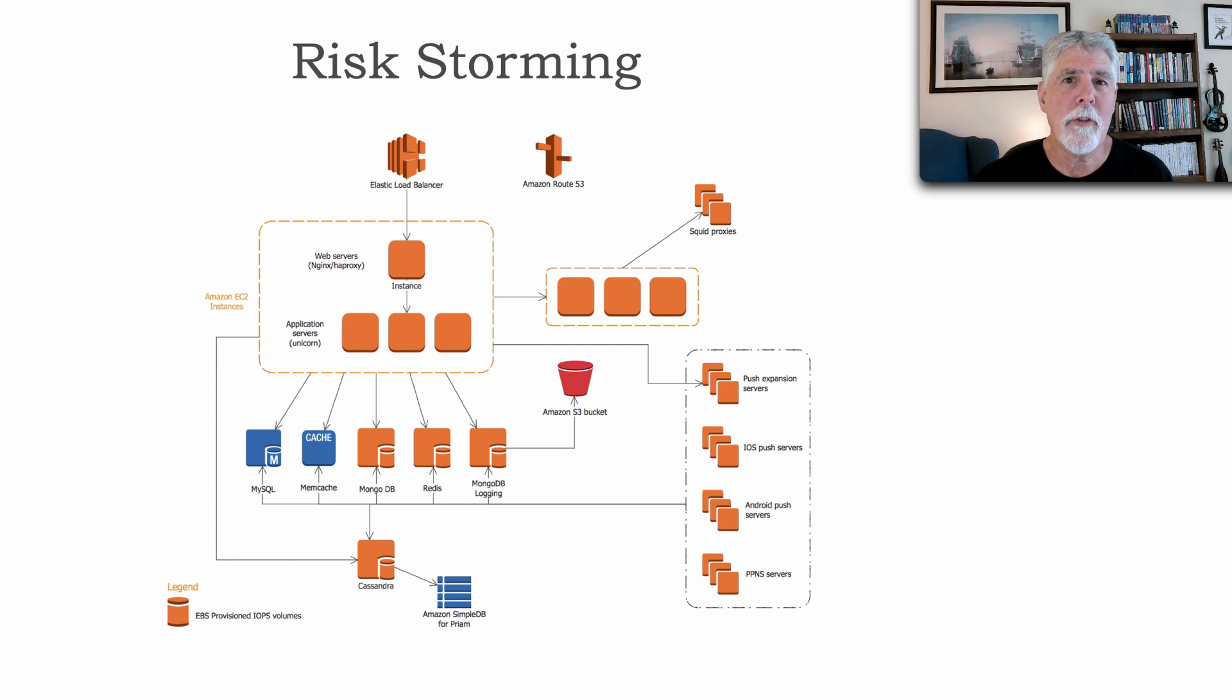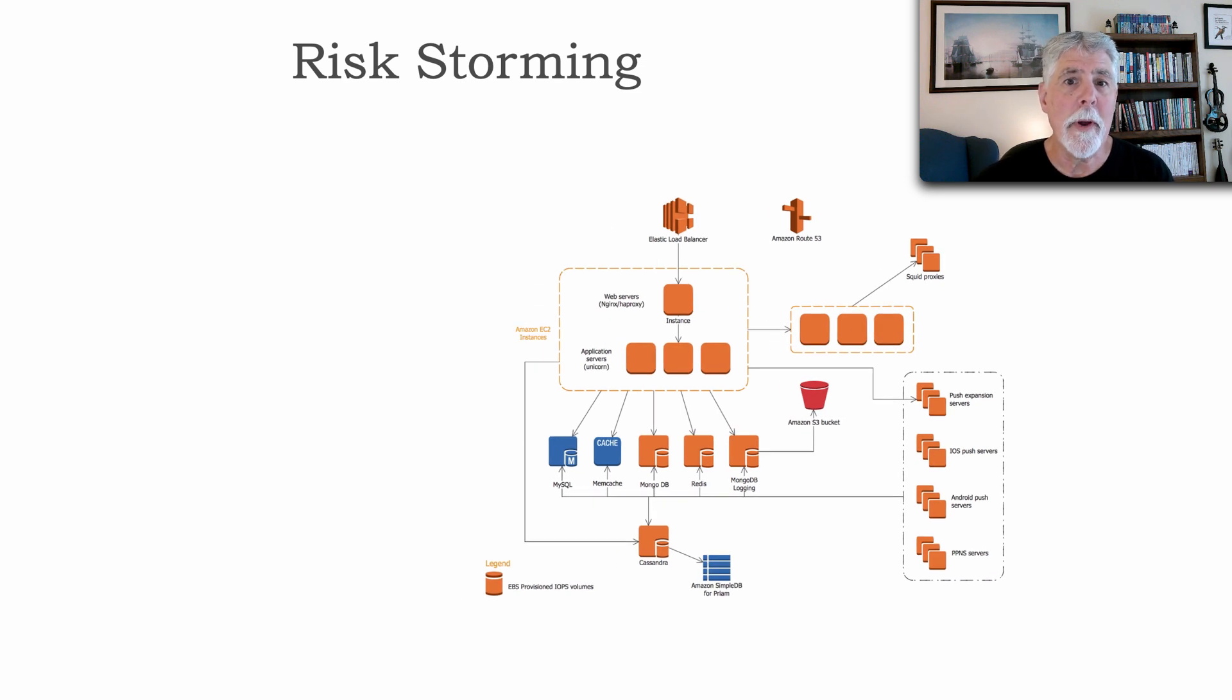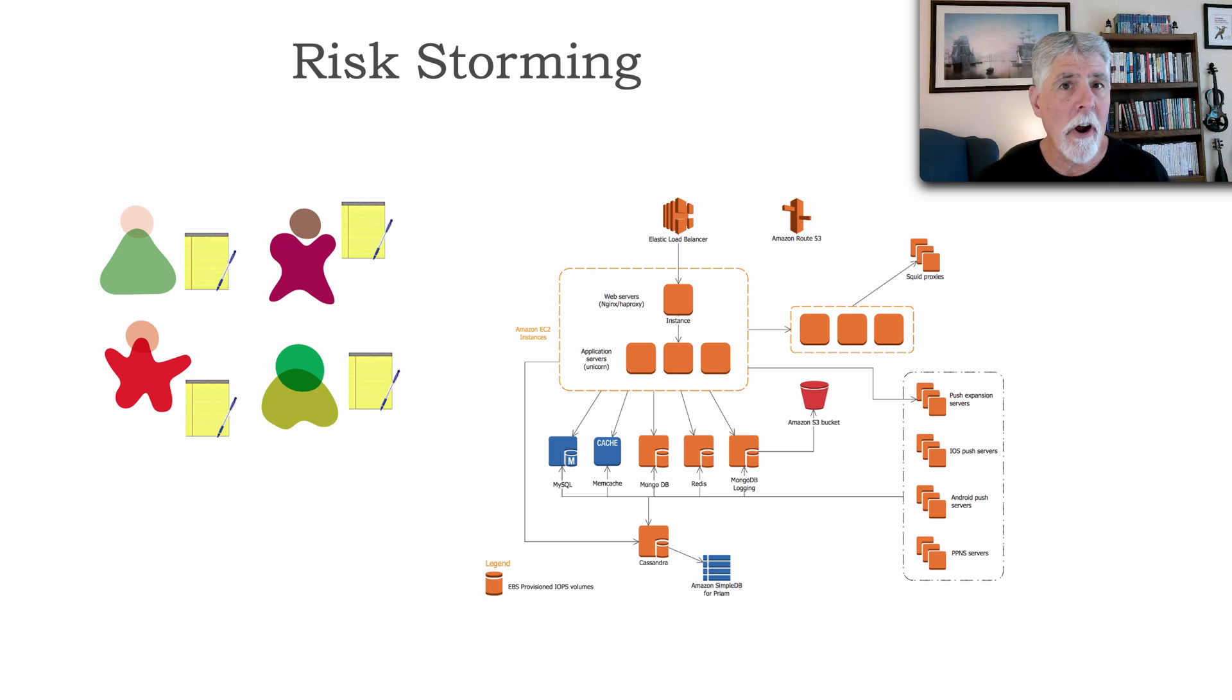Phase one is really an individual phase, where the team that is doing the risk storming analyzes the architecture individually. And they start, without any discussions between them, looking for risk areas using that matrix to identify one to two, which would be low risk, which would be green, three to four medium risk, which would be yellow, and then six to nine, which would be high risk in terms of being red.